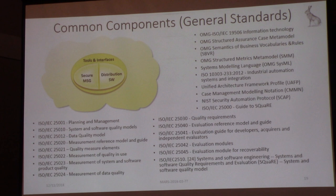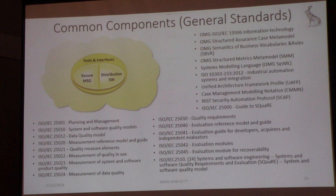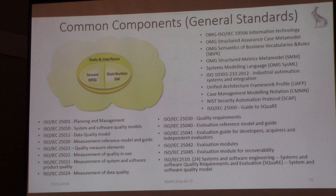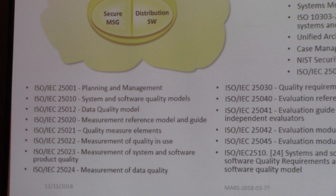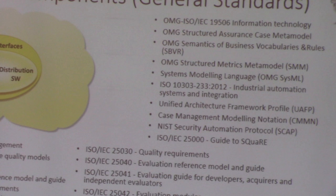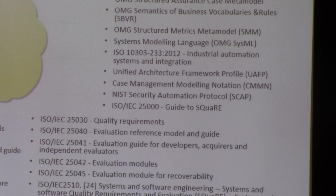Here is an idea of the kinds of standards applicable to a general component. You see the ISO/IEC 25000 series — all about measuring data quality, software quality, and the goodness of your design. There are some OMG standards, including the Structured Assurance Case Metamodel, which reduces risk. There's Semantics of Business Vocabulary and Rules (SBVR): when writing rules, am I misusing words? I call it an account when it's really a ledger — that kind of thing matters.